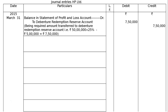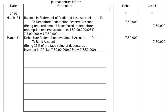That is rupees 7 lakh 50,000 in the debit as well as in the credit — being the required amount transferred to debenture redemption reserve account, that is rupees 50 lakh into 25% mandatory provision minus 5 lakhs already balance, equalling rupees 7 lakh 50,000. The second entry on this date: debenture redemption investment account debited to bank account, being 15% of the face value of debentures invested — that is rupees 50 lakh into 15%, equalling rupees 7 lakh 50,000.